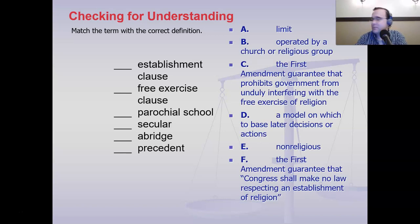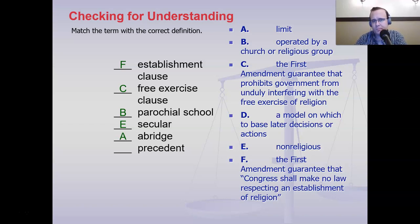Establishment Clause — a little review time. The establishment clause is the First Amendment guarantee that Congress shall make no law respecting an establishment of religion. The Free Exercise Clause is the First Amendment guarantee that prohibits government from unduly interfering with the free exercise of religion. A parochial school is one operated by a church or religious group. 'Abridge' means to limit. 'Precedent' — well, it's the only one left. I might look for these terms to come up on the final if I were you.